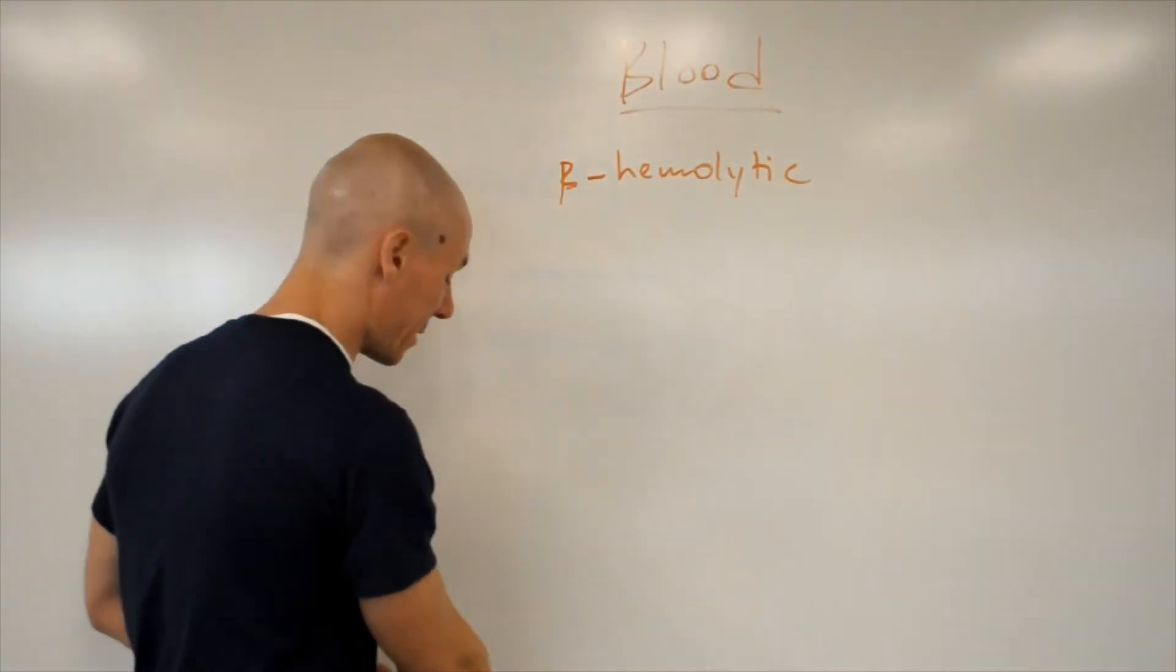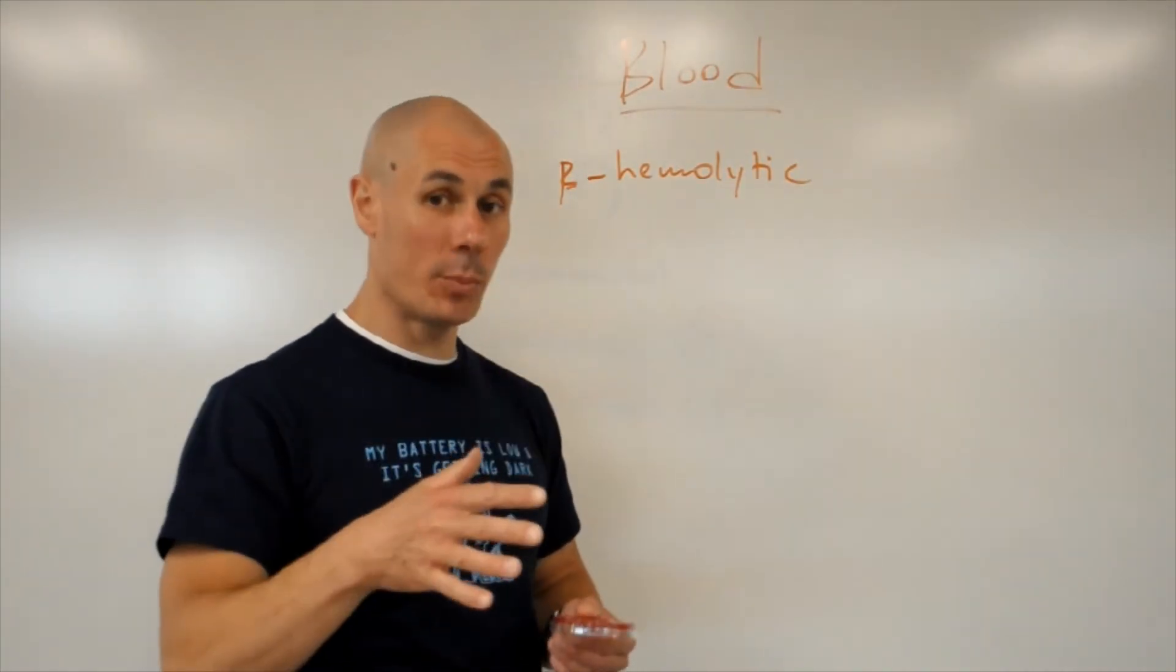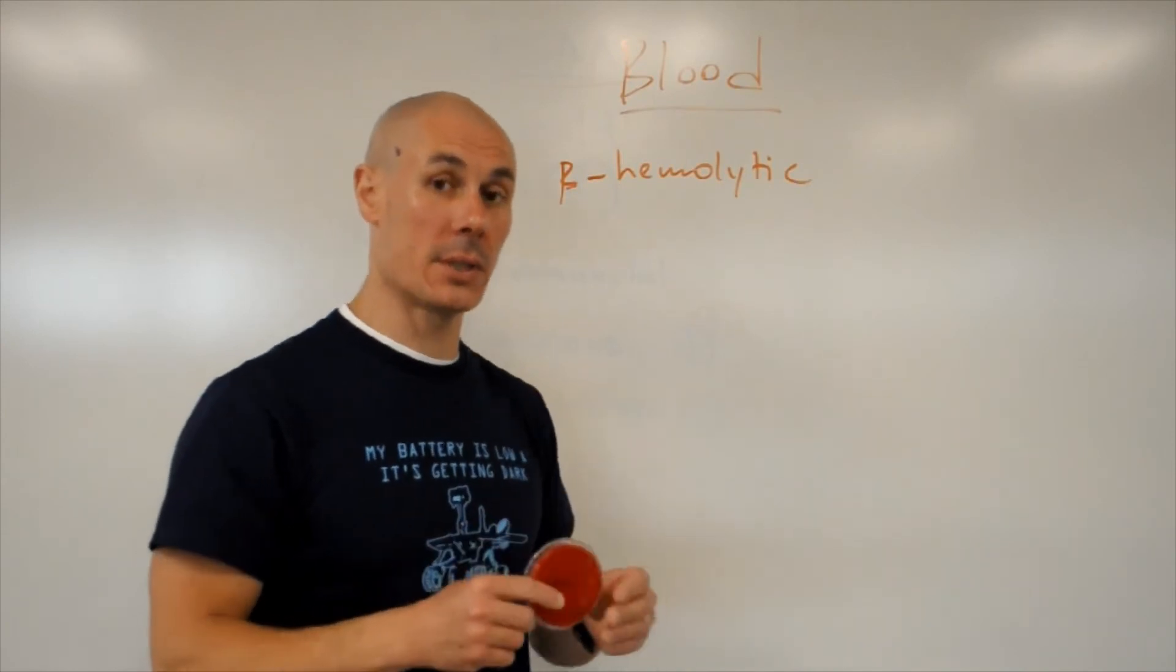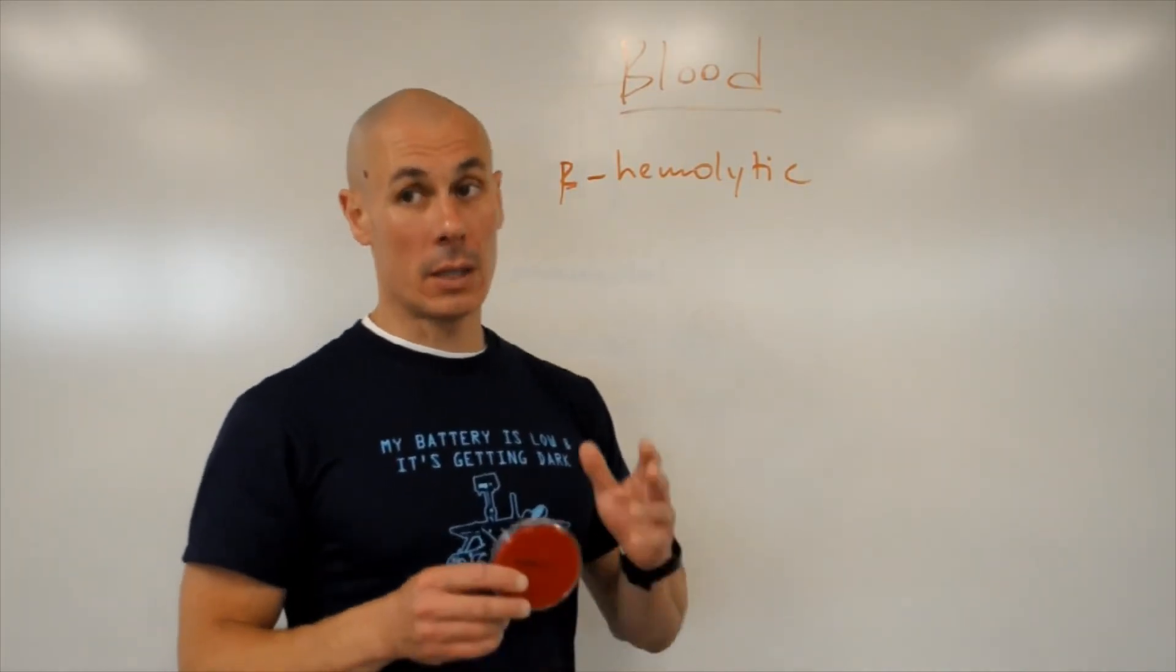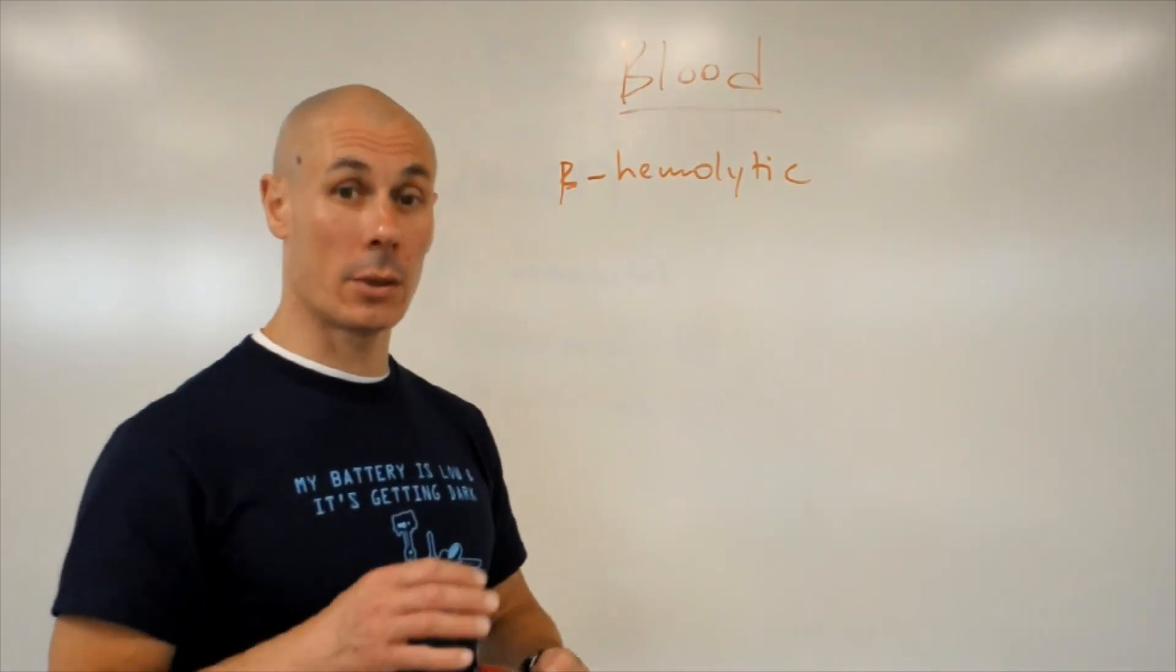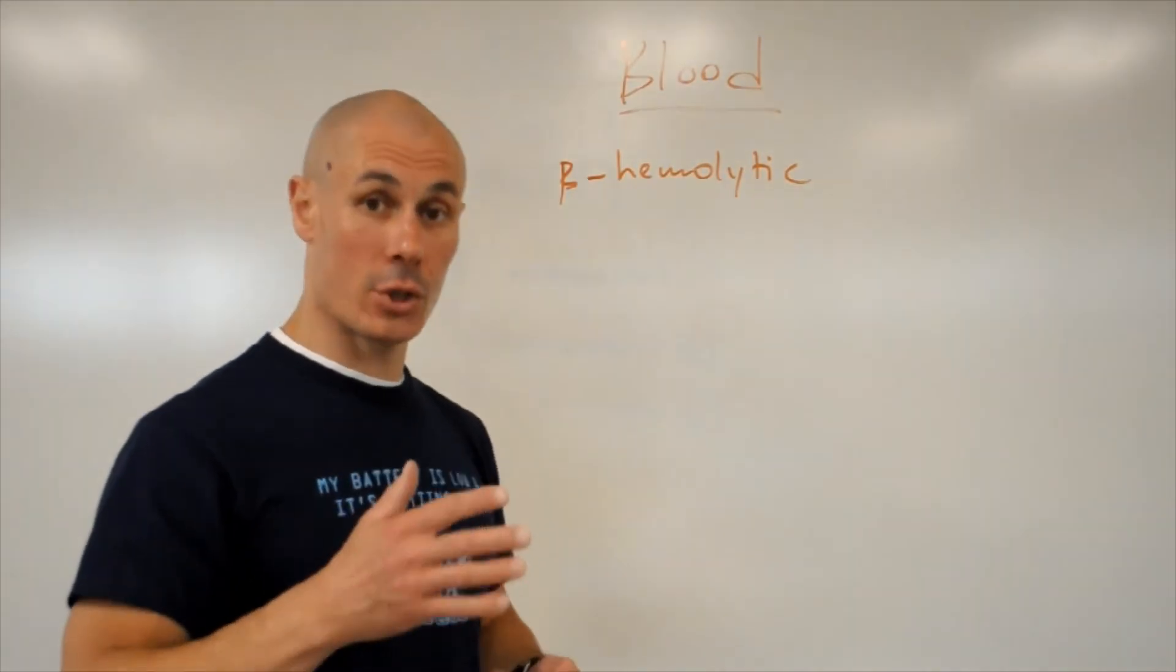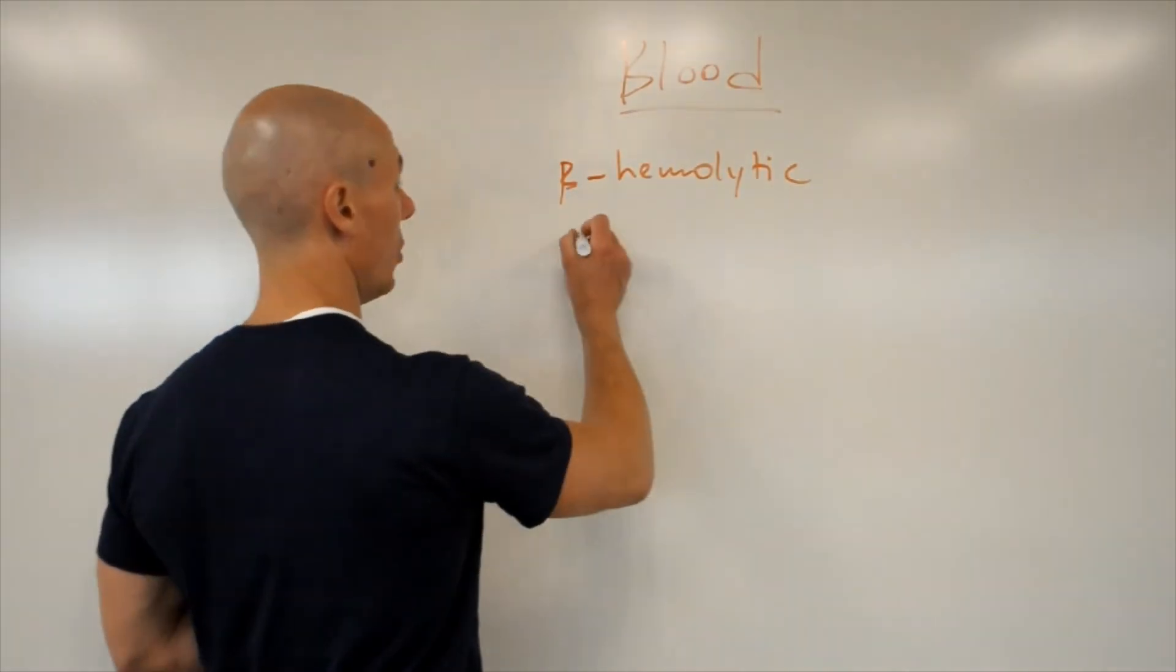Some microorganisms kind of break down red blood cells but not completely. They still lead to the release. That breakdown still leads to the release of iron. And these microorganisms, these colonies, will be surrounded by the greenish, brownish halo. These are called alpha hemolytic.